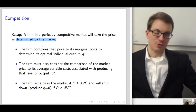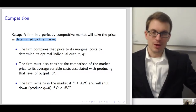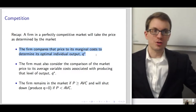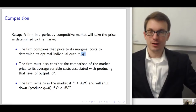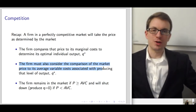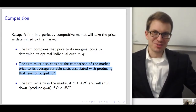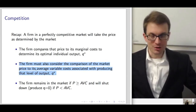There's going to be a single price determined by the interaction of demand and supply. A given individual competitive firm compares that price to its own cost structure and wants to produce the quantity corresponding to where price equals marginal cost. The firm must also consider the comparison of the market price to its average variable cost associated with producing that level of output.